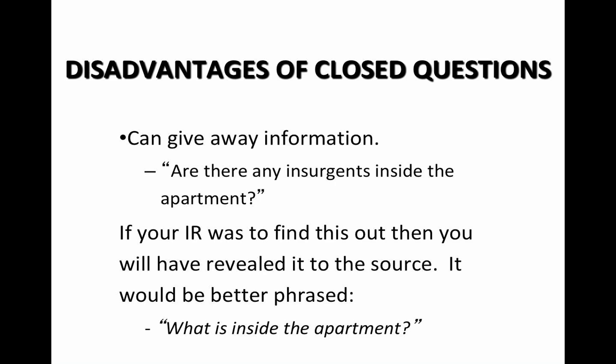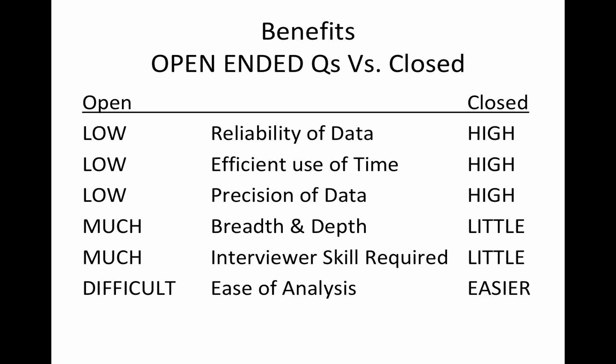What is inside the apartment? If you ask 'Are there any insurgents inside the apartment?' you'll get a yes or no. But if you ask 'What or who is inside the apartment?' you're more likely to get 'There's a family of five — a mother, father, three kids — and there are two insurgents.' Looking at the open vs. closed matrix: reliability of data is a bit lower for open questions, higher for closed. Ease of analysis is more difficult for open questions because there's more complex information, whereas closed questions are more definitive — yes or no.